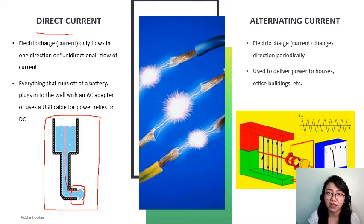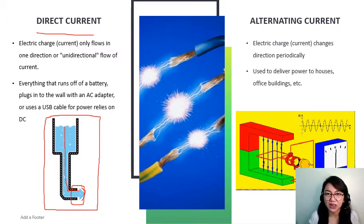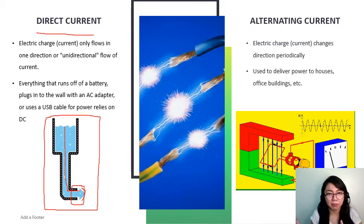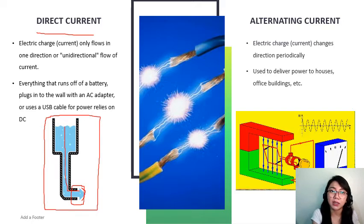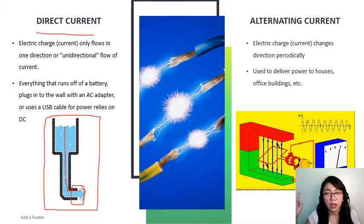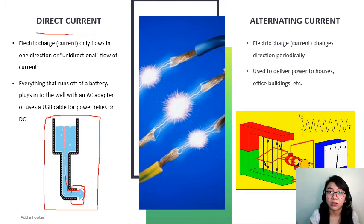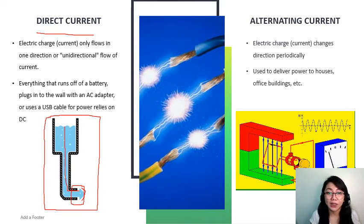For example, with a USB cable — when you plug it into a USB connector, the flow of electricity goes from your laptop out through the USB. Similarly, when you're charging your phone, electricity flows from the source outlet to your phone. So it only flows in one direction.